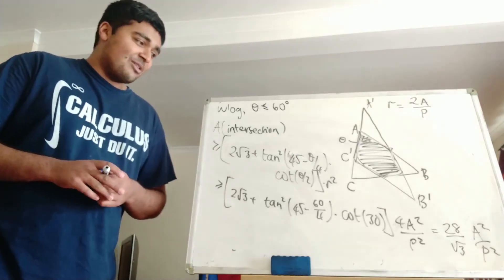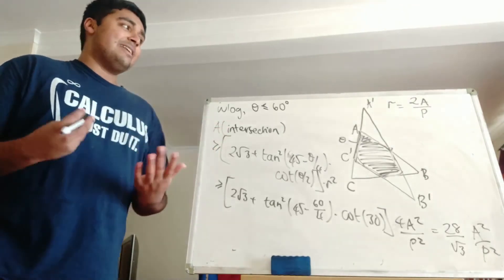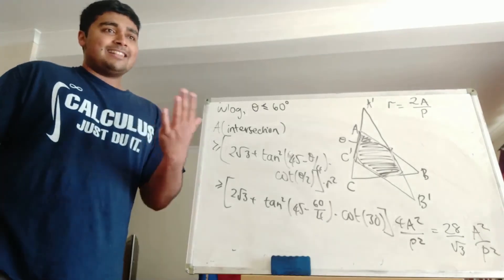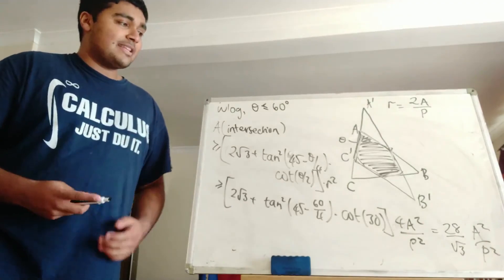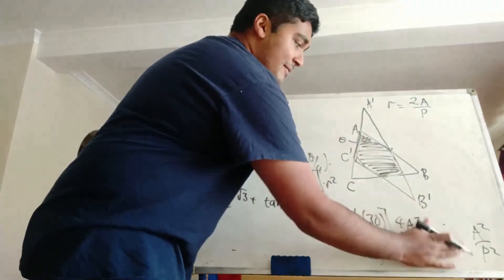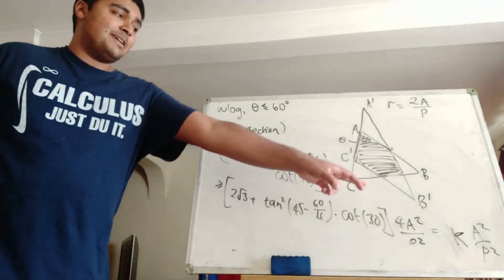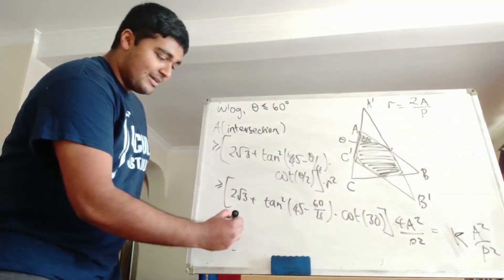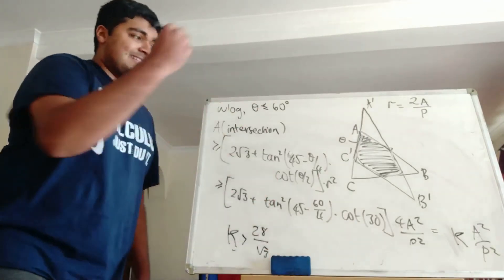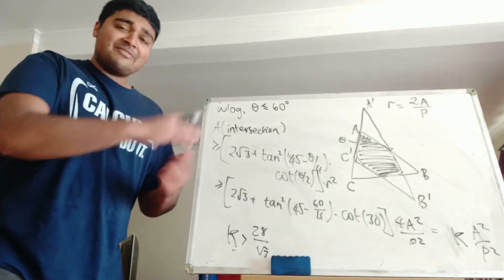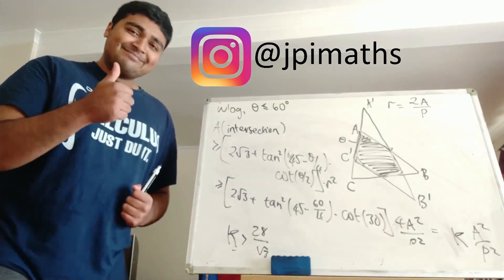I hope you enjoyed this video. Most of it was quite elementary to follow. As I said at the start, there are a few different ways to prove this result, and in fact you can find a stronger bound: the area of the intersection is at least k·A²/P² where k is a constant bigger than 28 over root 3. I'll leave that as an exercise to you. Thank you for watching, I'll catch you in the next one. Have a great day.